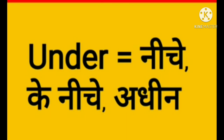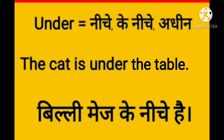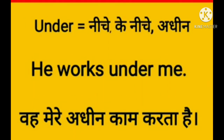Next is 'under'. Under means 'neeche' (below) or 'adheen' (subordinate). Adheen means when we work under someone. Example: The cat is under the table — billi mej ke neeche hai. Another example: He walks under me — vahe mere adheen kaam karta hai.